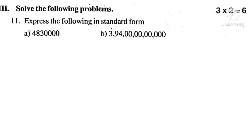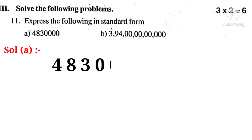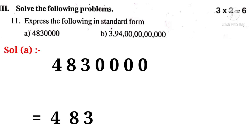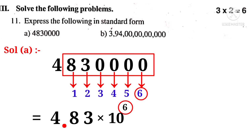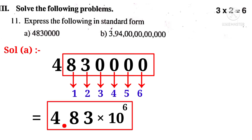Now let us take Roman number 3: Solve the following problems. Number 11: Express the following in standard form. Solution A: Write the number 4,83,4 followed by zeros. Write the non-zero digits 4, 8, 3 only, put a decimal point to the right of 4. Count the digits to the right of 4 — there are 6. So write into 10 power 6. Thus 4.83 into 10 power 6 is the standard form.